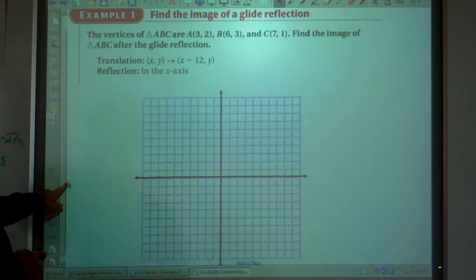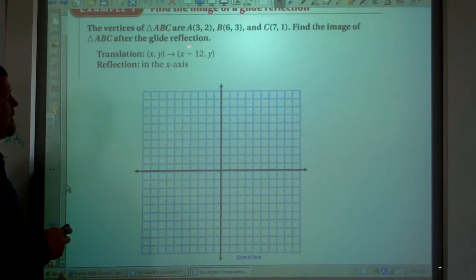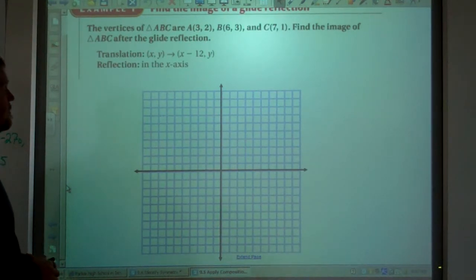Alright, the vertices of triangle ABC are 3 comma 2, 6 comma 3, and 7 comma 1. Find the image of triangle ABC after the glide reflection.